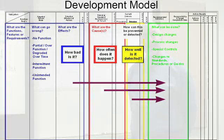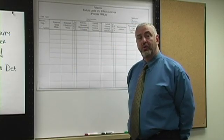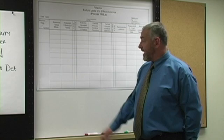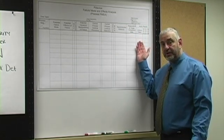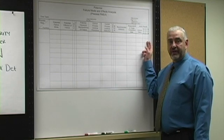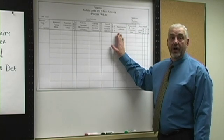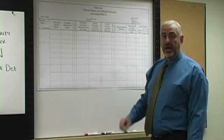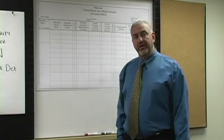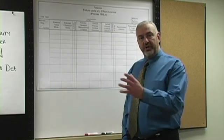Once I have the RPNs, I can assign the RPN to each action so that when I finally take the action and evaluate the results, I recalculate the severity, occurrence, or detection, depending on what kind of action it was, with a new RPN, comparing that to the old RPN. That's the relative improvement that we have achieved through these particular actions.